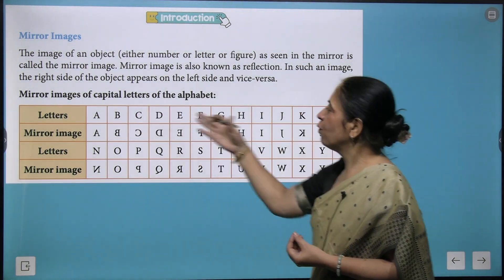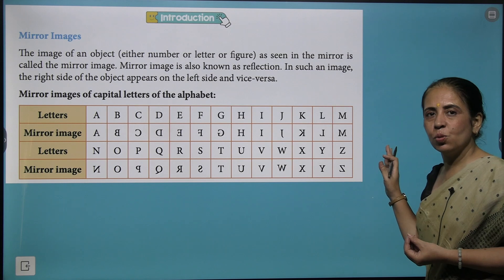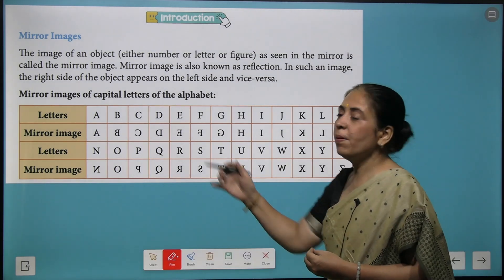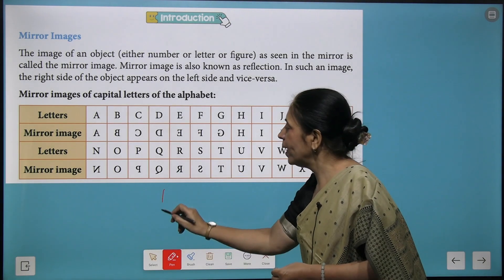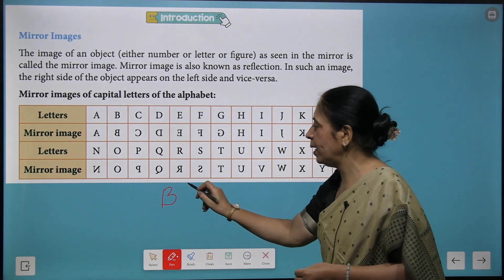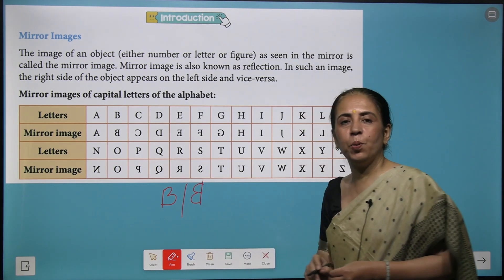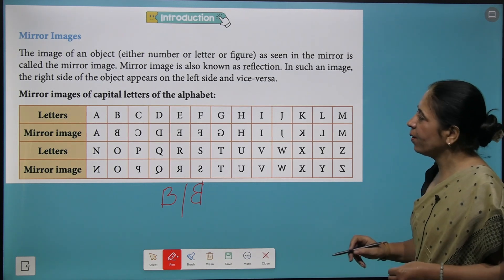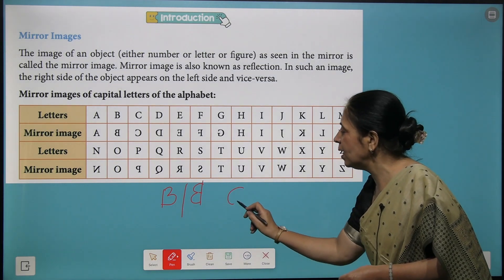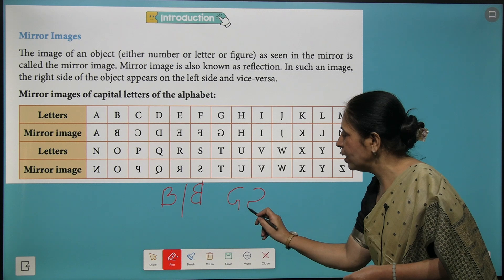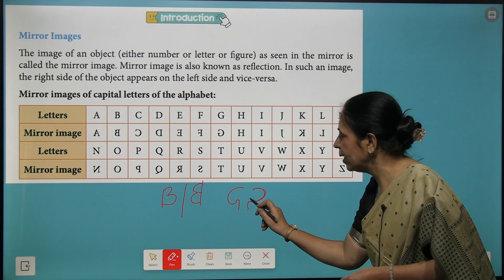Here we have different alphabets from A to Z which have their mirror images over here. So I'll just give you the example: if you write alphabet B its mirror image will be vertically inverted like this. If I write alphabet G like this, so its mirror image will come like this.